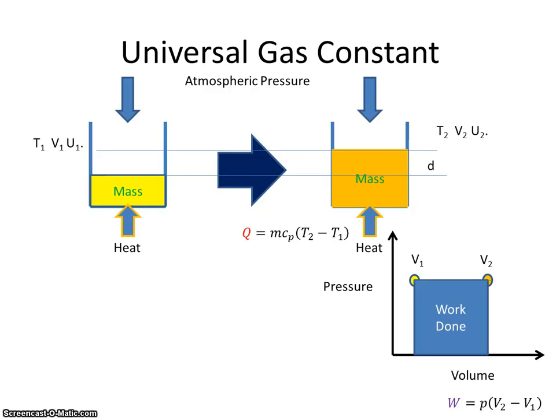So to help us do this, we're going to heat a mass of gas from T1 to T2, and its volume is going to change from V1 to V2, and its internal energy is going to change from U1 to U2. The heat required from the definition of specific heat capacity will be equal to the mass of the gas times the change in temperature.